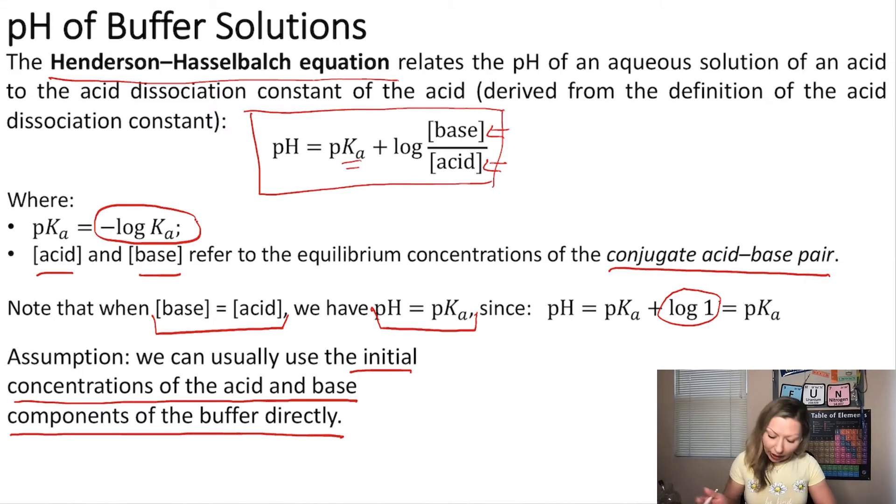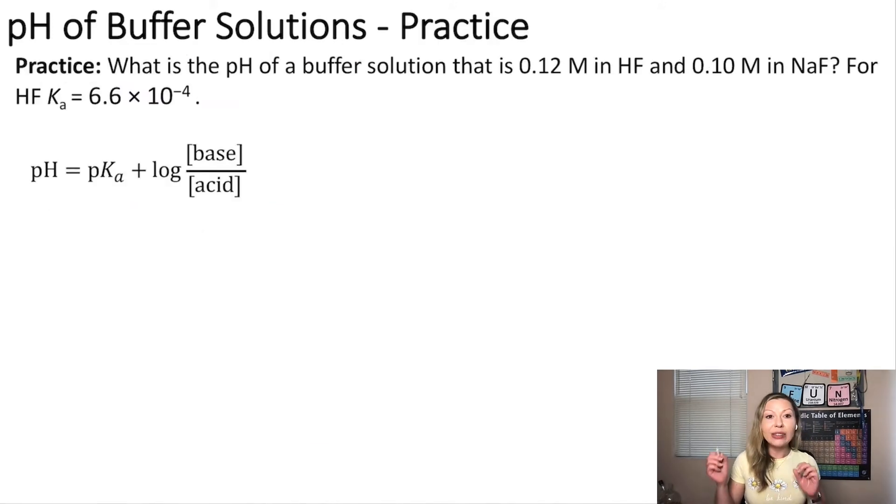All right, let's do an example. Let's figure out what is the pH of a buffer solution that is 0.12 mol per liter in hydrofluoric acid and 0.10 mol per liter in sodium fluoride. And we are given the Ka for hydrofluoric acid.